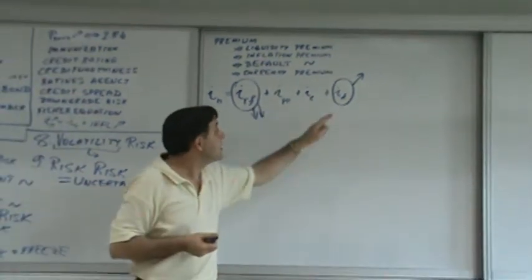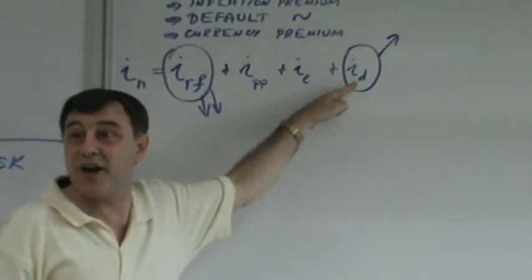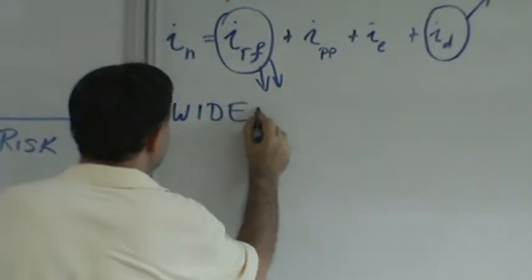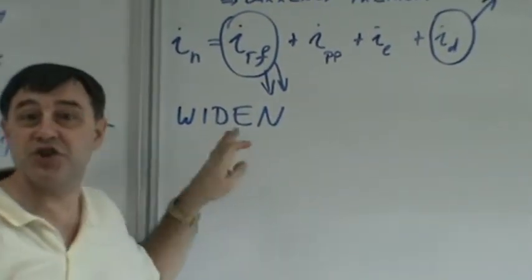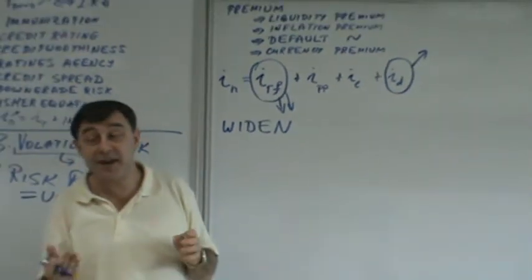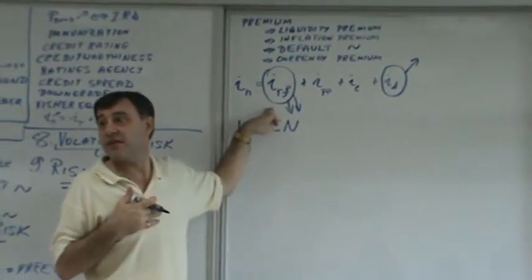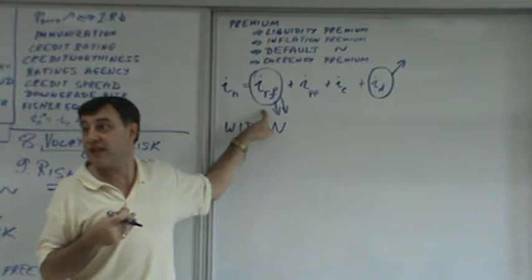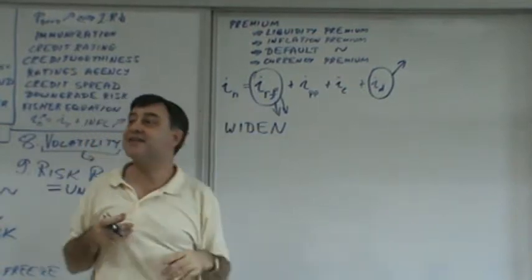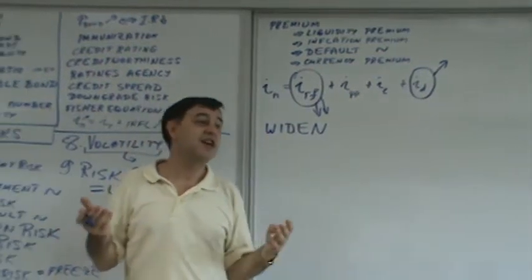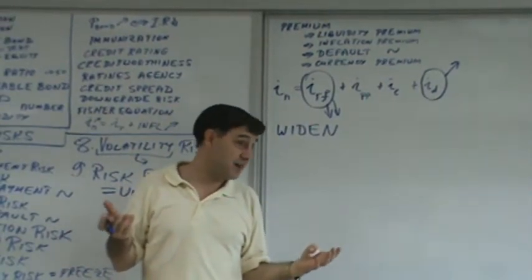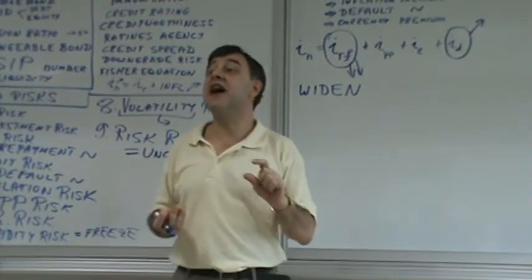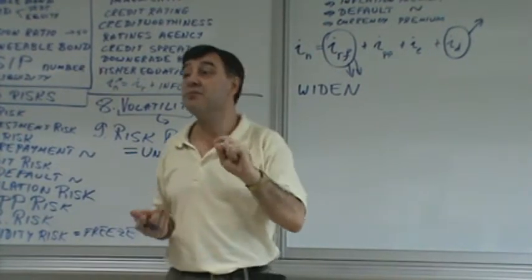During the downgrade, the default premium or credit spread widened. Widen refers to increase of a credit spread, but the risk-free rate went down. And the question was, why or what drove the risk-free rate down? That's now the question of what determines interest rates in the economy. You've studied it in money, banking, and monetary economics, and I'll give you a short, sweet, three-minute summary.